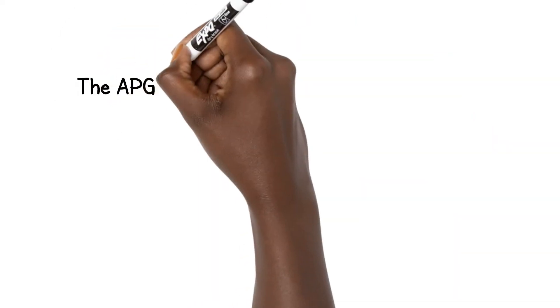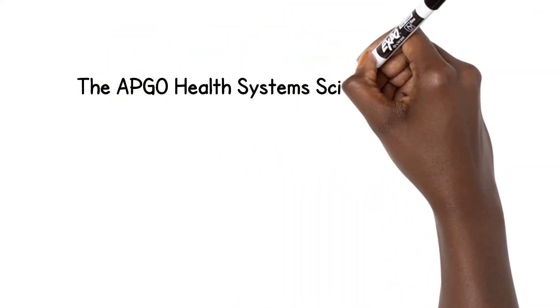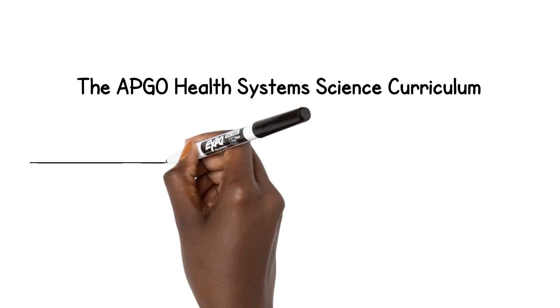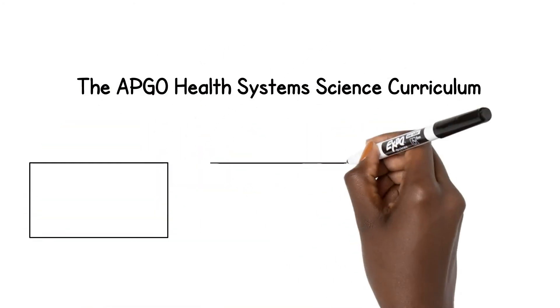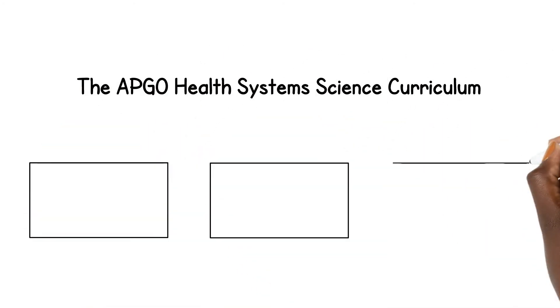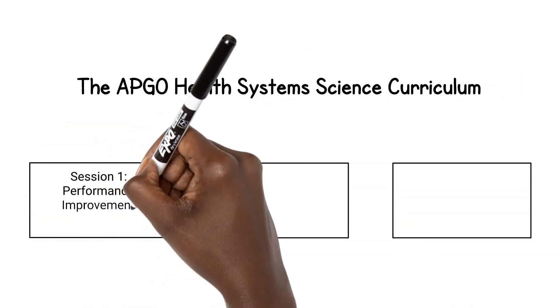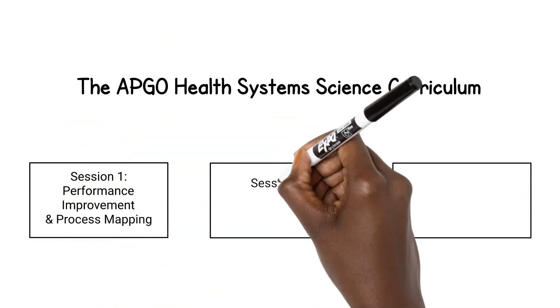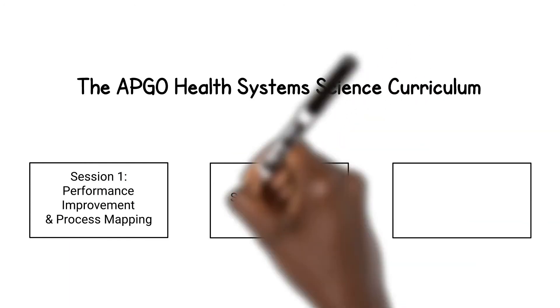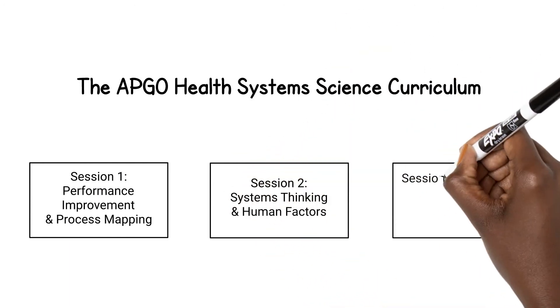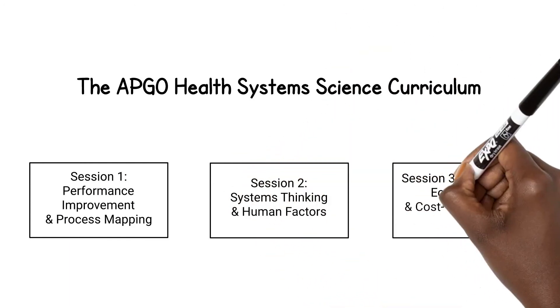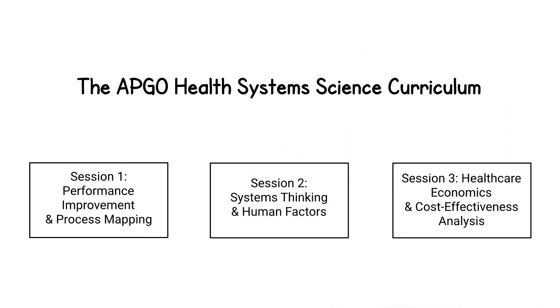The APGO Health System Science Curriculum is a program developed in three parts and is intended to introduce you to several concepts within Health System Science.